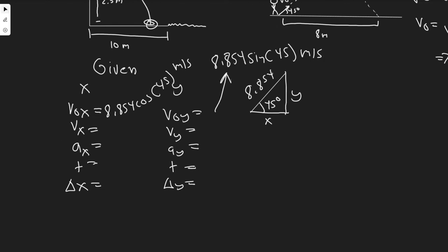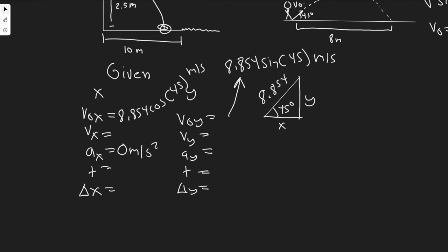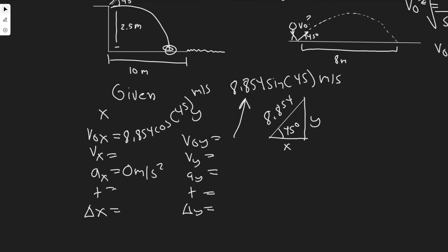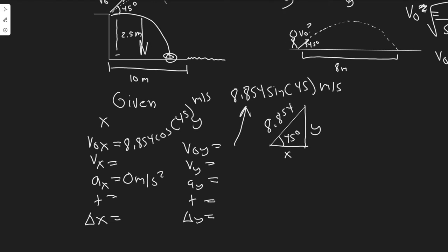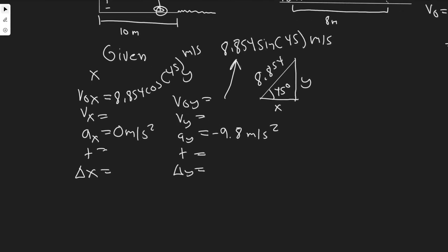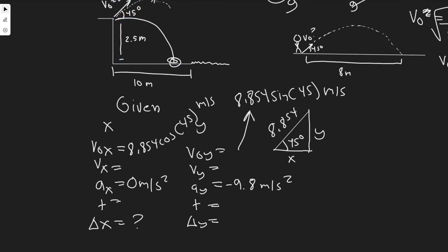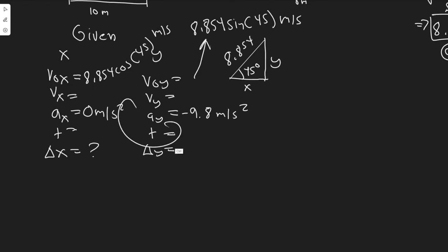The acceleration in the x, whenever you do a problem like this, is always zero unless otherwise specified, because the acceleration in these problems is always due to gravity. Gravity only acts in the y direction, straight down. So no component in the x. In the y, it's minus 9.8 meters per second squared. The negative is the result of it pointing down. Time, we don't know either. Δx is what we're trying to solve for. And delta y is going to be the change in the y, which is minus 2.5 meters.